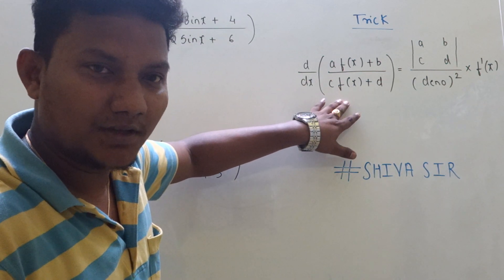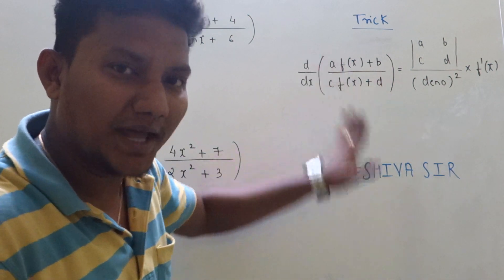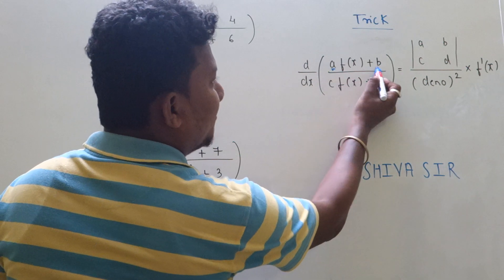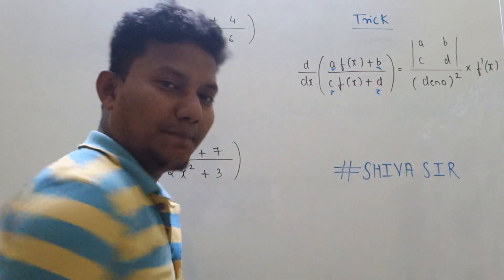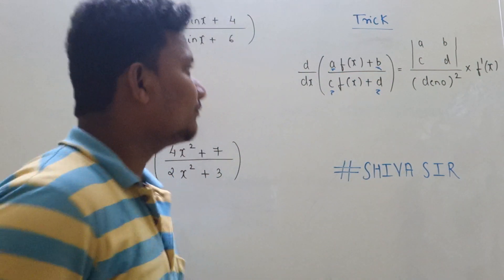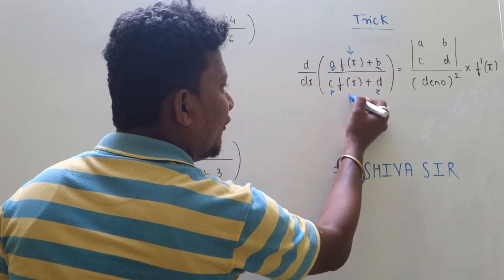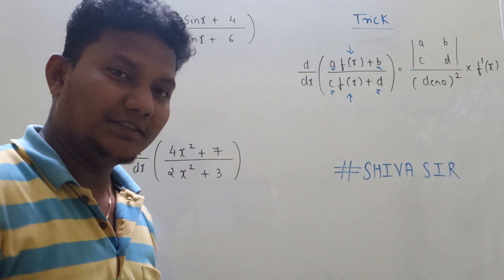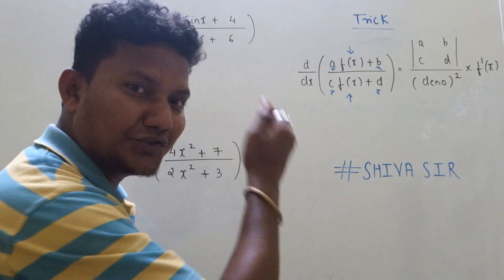First, focus on the pattern. This trick is only applicable when you have the pattern (a×f(x) + b) / (c×f(x) + d), where a, b, c, and d are constants, and f(x) has to be the same in both numerator and denominator. Then only the trick is applicable.